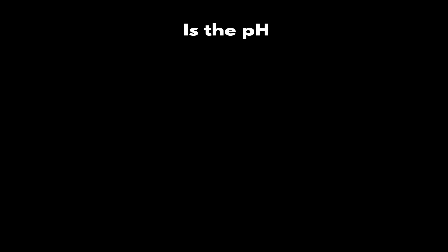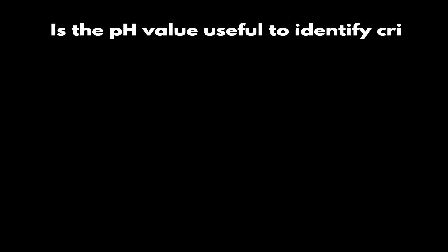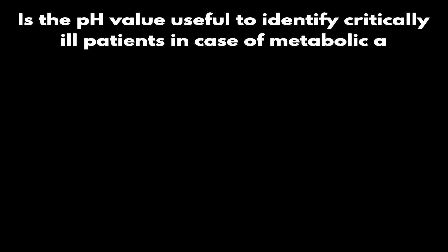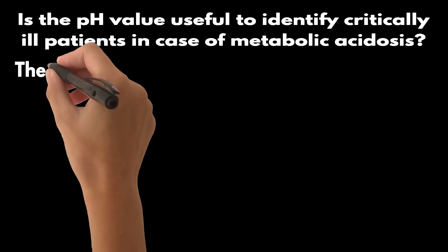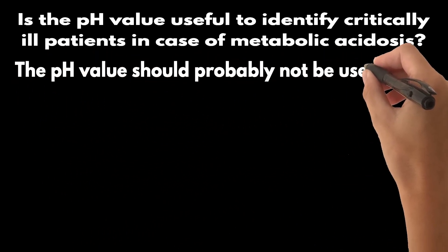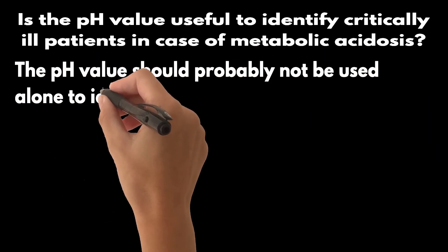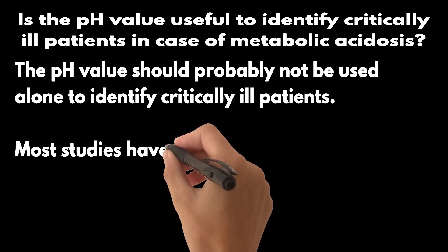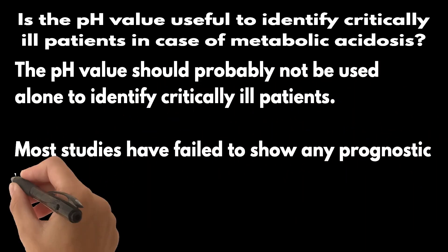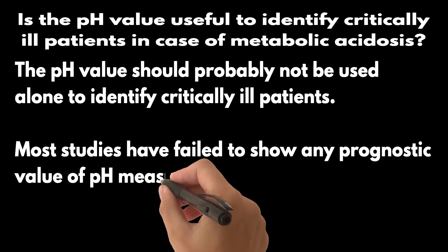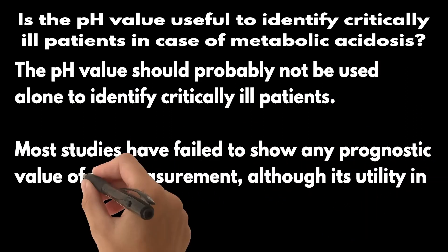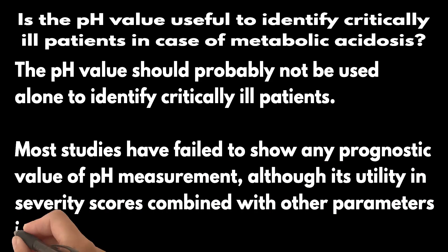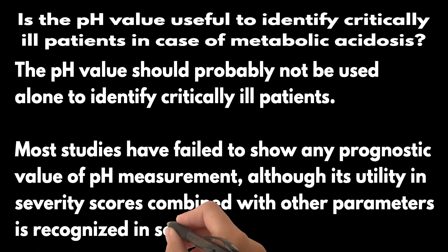Is the pH value useful to identify critically ill patients in cases of metabolic acidosis? The pH value should probably not be used alone to identify critically ill patients. Most studies have failed to show any prognostic value of pH measurement, although its utility in severity scores combined with other parameters is recognized in some cases.